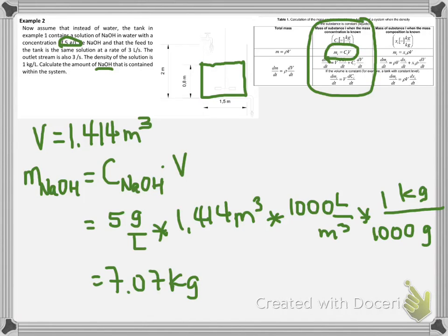As you can see, if we make the analysis of the dimensions in our equation, these liters cancel with these liters, this cubic meter with this cubic meter, these grams with these grams. So what we get is kilograms.